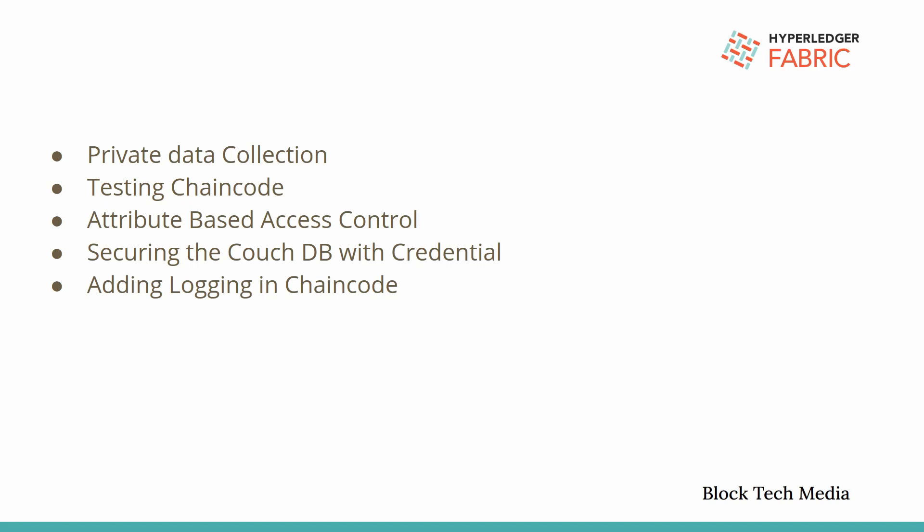We will also implement testing of the chain code, because every time we make changes and install chain code on each peer and instantiate it on the endorsing peer, that is a complex task. So before installing or instantiating, we can test locally, which won't take as much time compared to installing and instantiating on each peer.